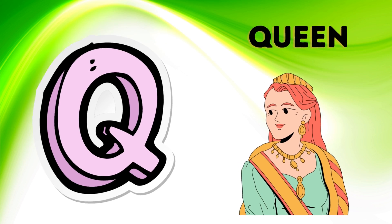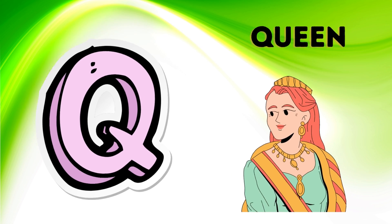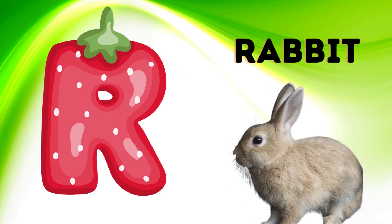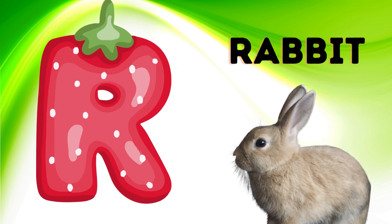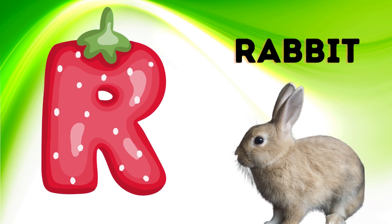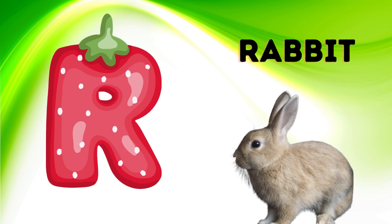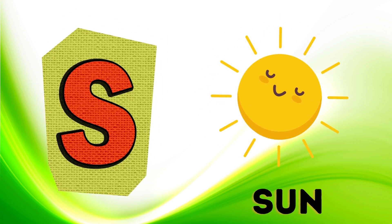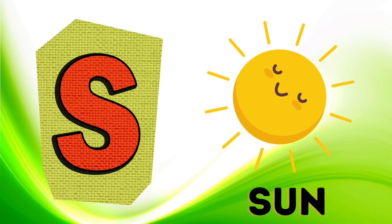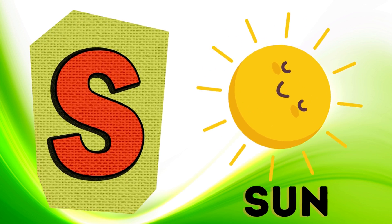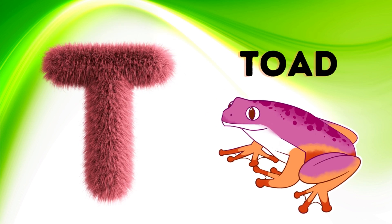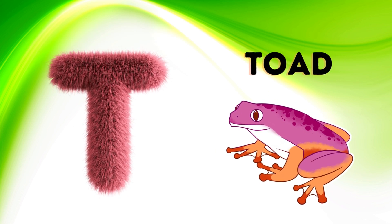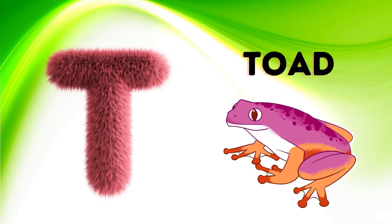Q is for queen, qu-qu-queen. R is for rabbit, r-r-rabbit. S is for sun, s-s-sun. T is for toad, t-t-toad.